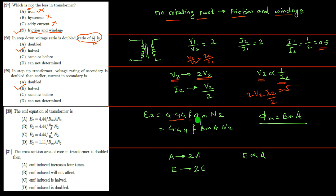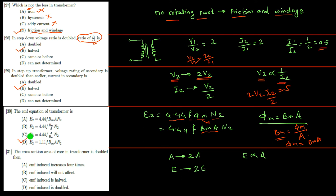The EMF equation of the transformer is E = 4.44 × f × Φₘ × N₂. Since flux density Bₘ = Φₘ / A, we get Φₘ = Bₘ × A. Substituting, E = 4.44 × f × Bₘ × A × N₂. So the correct option is D. If the cross-section area of the core is doubled, the EMF induced is directly proportional to area, so the EMF induced is also doubled. Correct option is D.